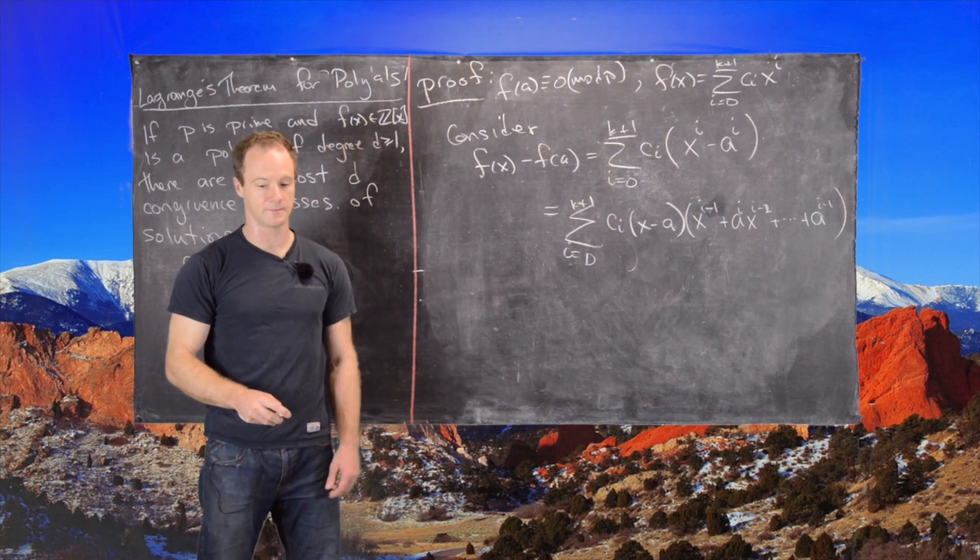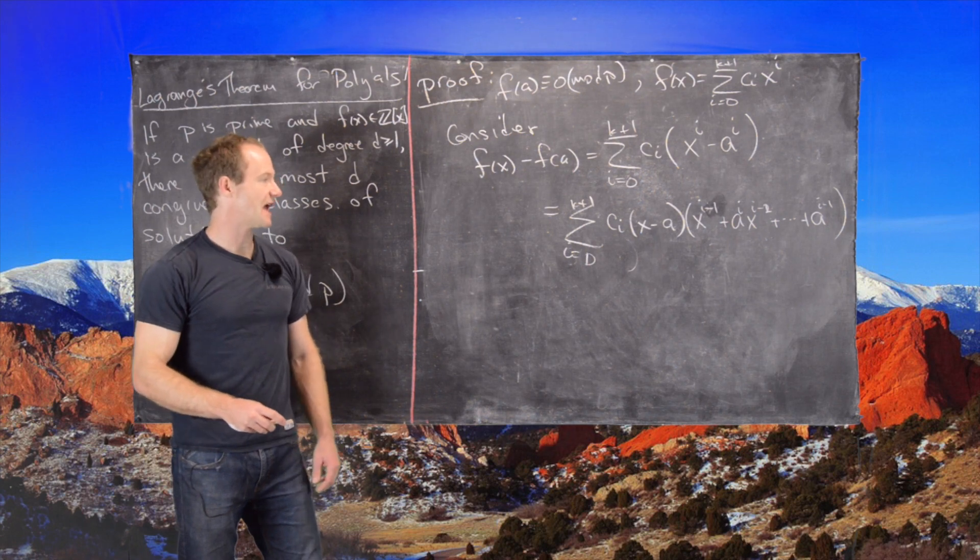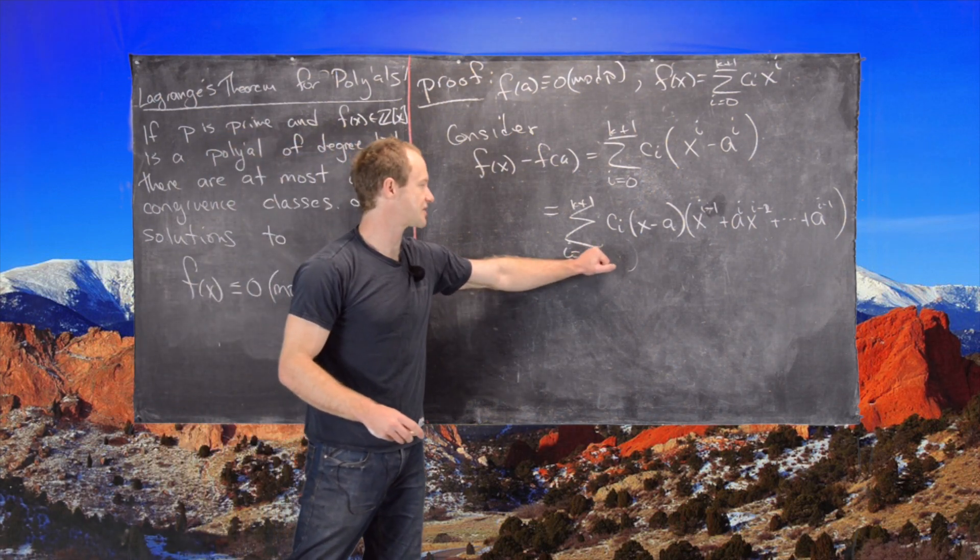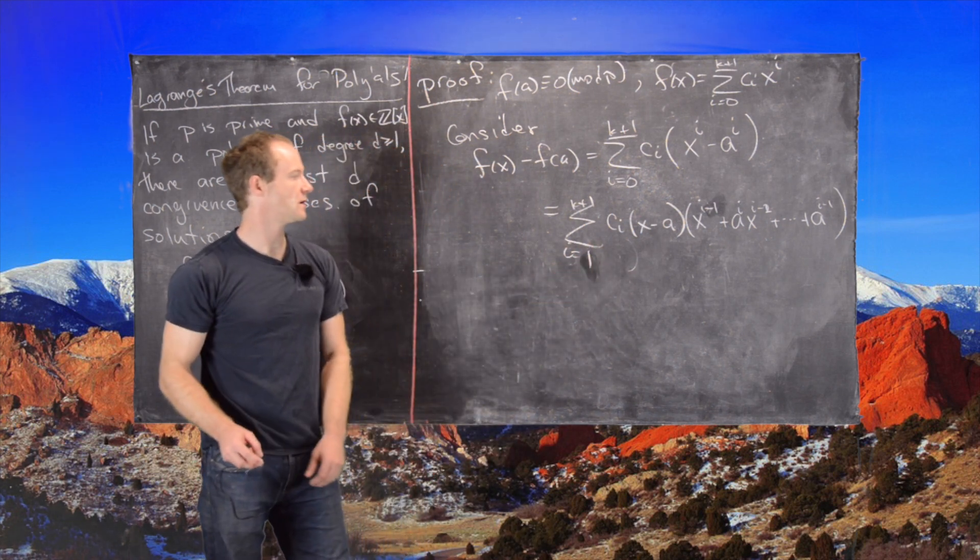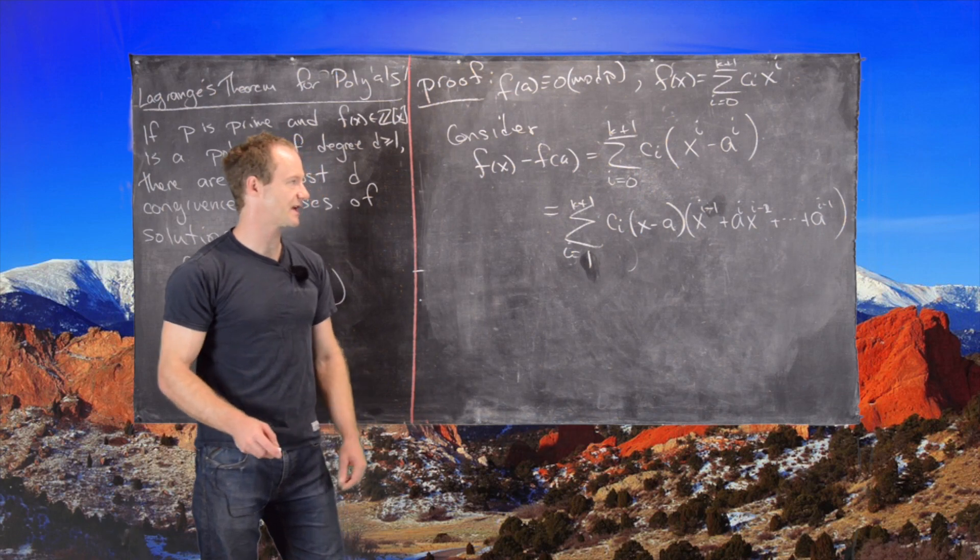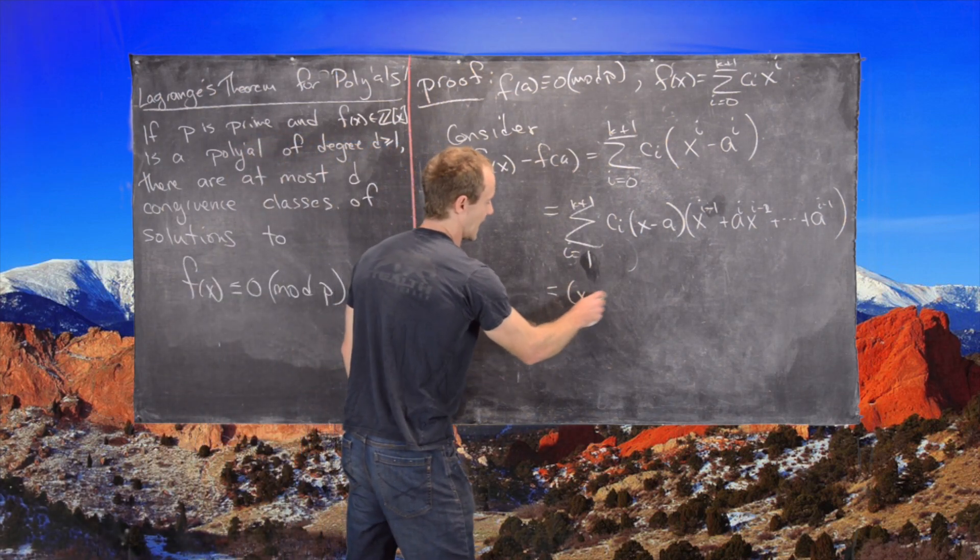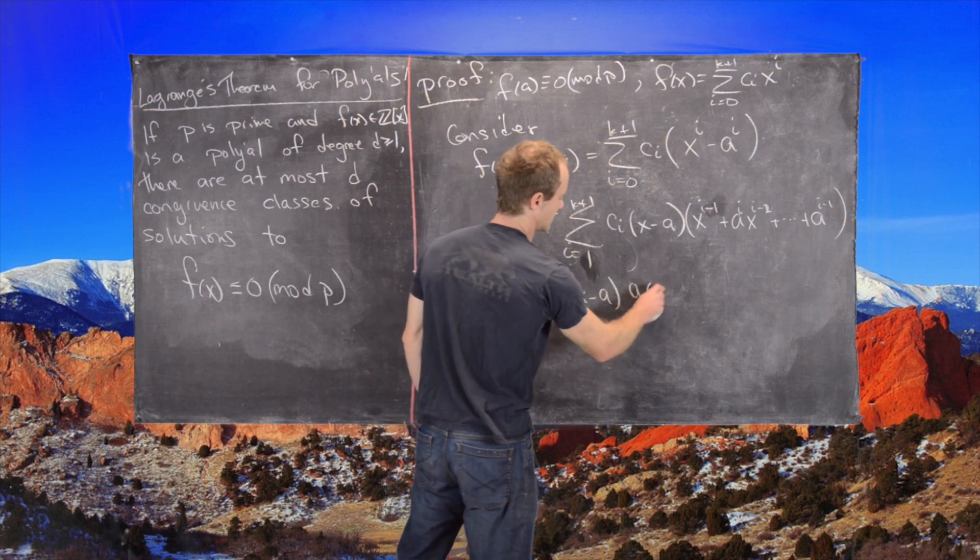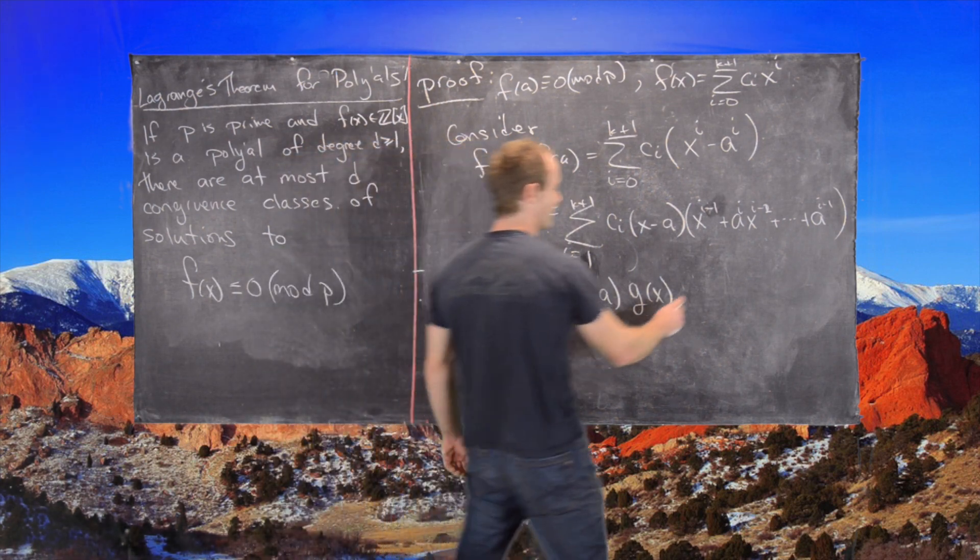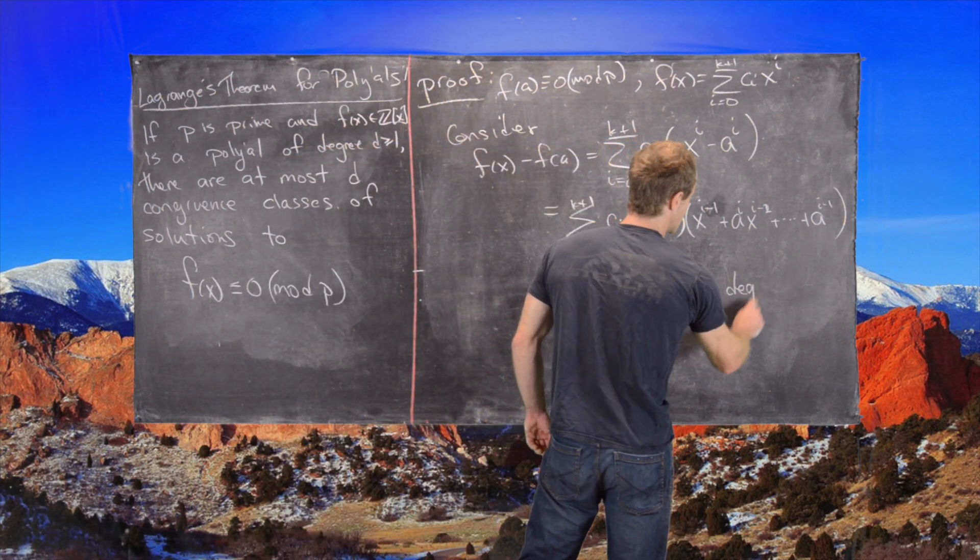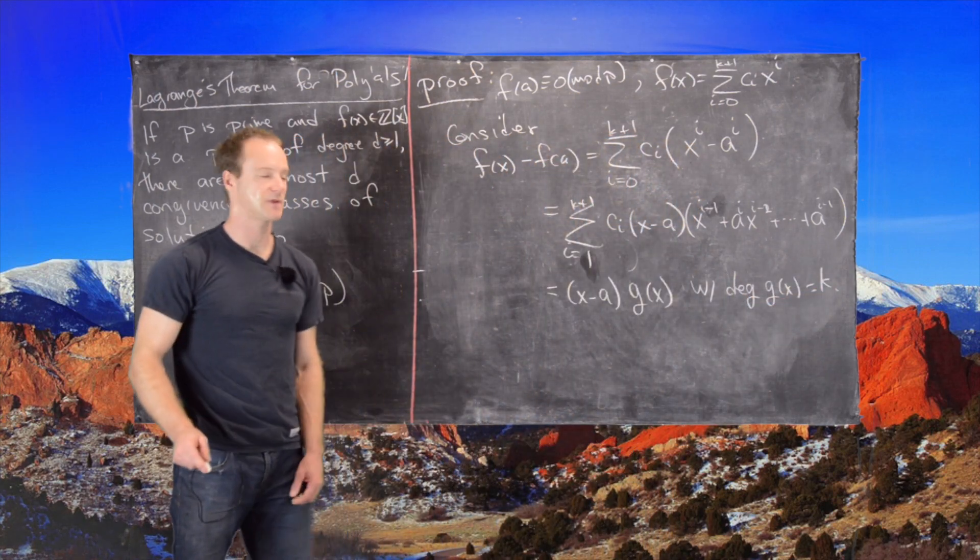Now notice that we can factor an X minus A out of that, especially noticing that we can actually take this sum going from 1 to K plus 1 because the zeroth term cancels. That is going to give us X minus A times another function G of X and further the degree of G of X equals K.